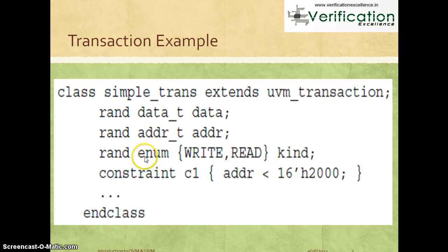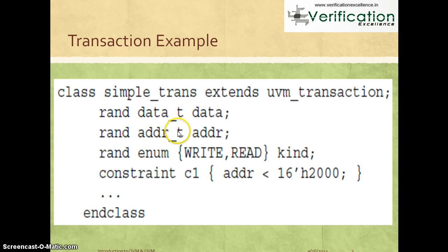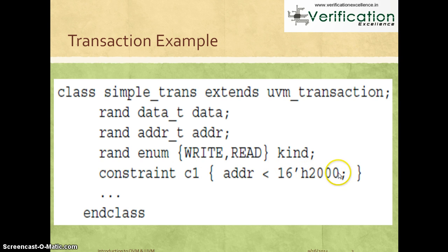You then define all the information needed for this simple transaction. You have a data member of type data_t, which could be defined as something like bit [31:0] or logic [31:0]. You also need the address information — another rand variable of type address_t. Then you have another variable which is an enum that can take two possible values: write or read. You can also create constraints, which are SystemVerilog constructs. For example, a constraint limiting the address to always be less than 'h2000. This simple class definition groups all the information needed for that specific transaction.